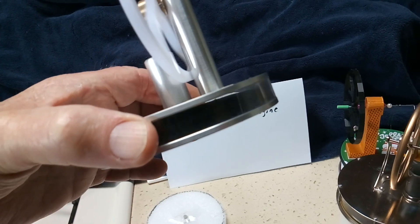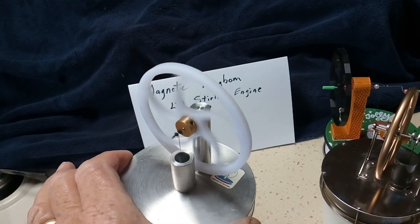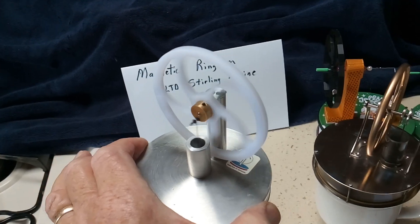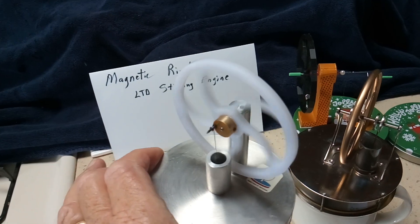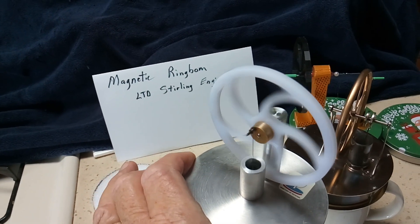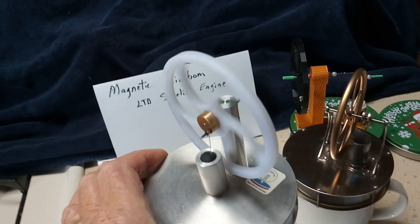That runs on cold versus colder. This will run off the palm of your hand versus air temperature, really nicely. It's a very good low temperature differential Sterling engine, called a magnetic ring bomb, about 30 bucks on eBay, very precision.